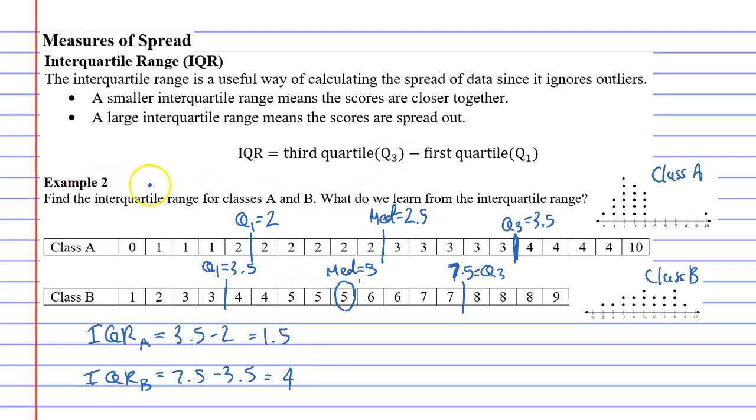So in the question, it asks us to find the interquartile range for classes A and B, which we've done. And what do we learn from the interquartile range? Well, we learn that class A is grouped close together, and class B is spread out.